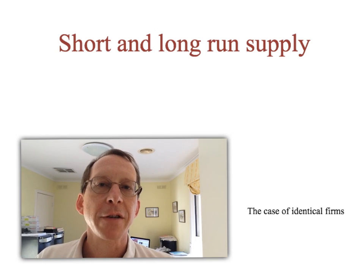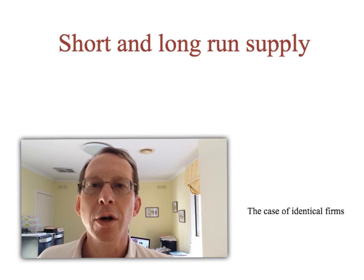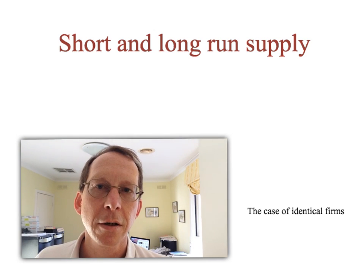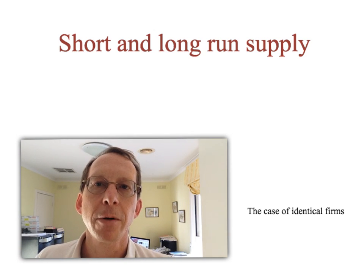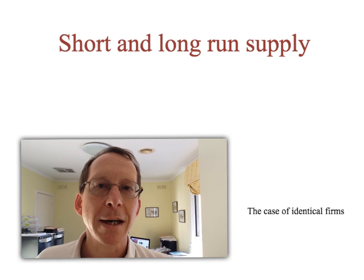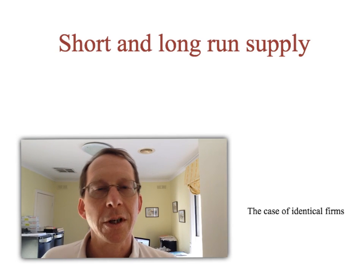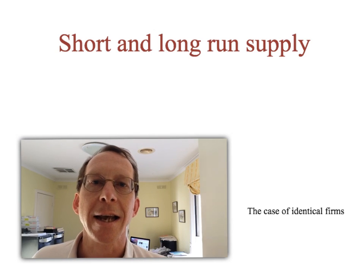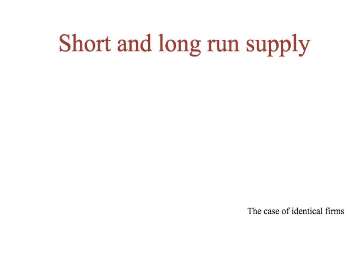Remember, the difference at the market level is not only do fixed costs become variable in the long run — that's what happens at an individual firm level, and it also happens at the market level — but also at the market level, the number of firms can change in the long run. Firms can enter and exit. We're going to start with the simplest case where we assume there's an arbitrarily large number of identical businesses.